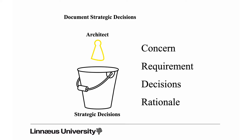Documenting architecture means documenting strategic decisions. Here is the architect with the concern, the requirements, the decisions, and the rationale — which is why we make the decision. If you are able to capture these four aspects to a degree that is good enough, then it's good enough. It's not about how much you document; it's about what you document.